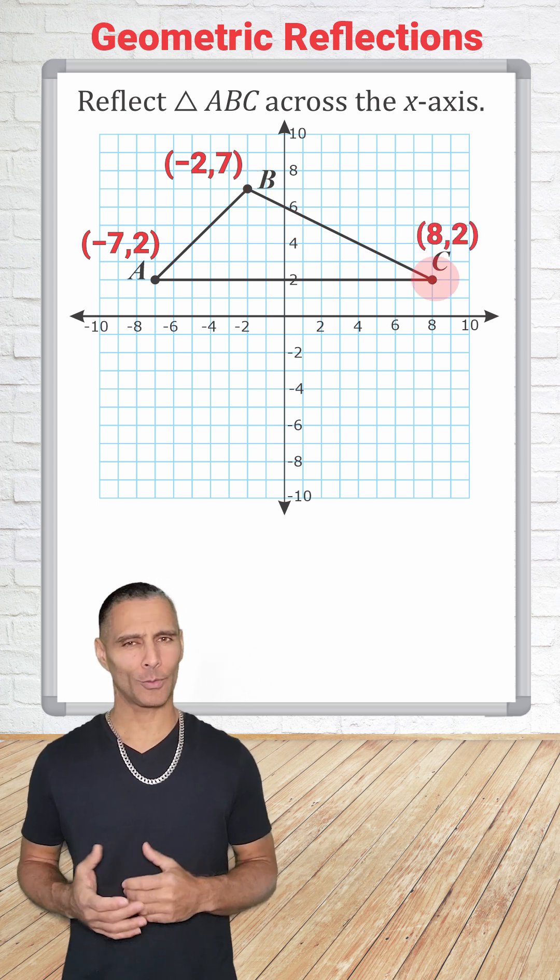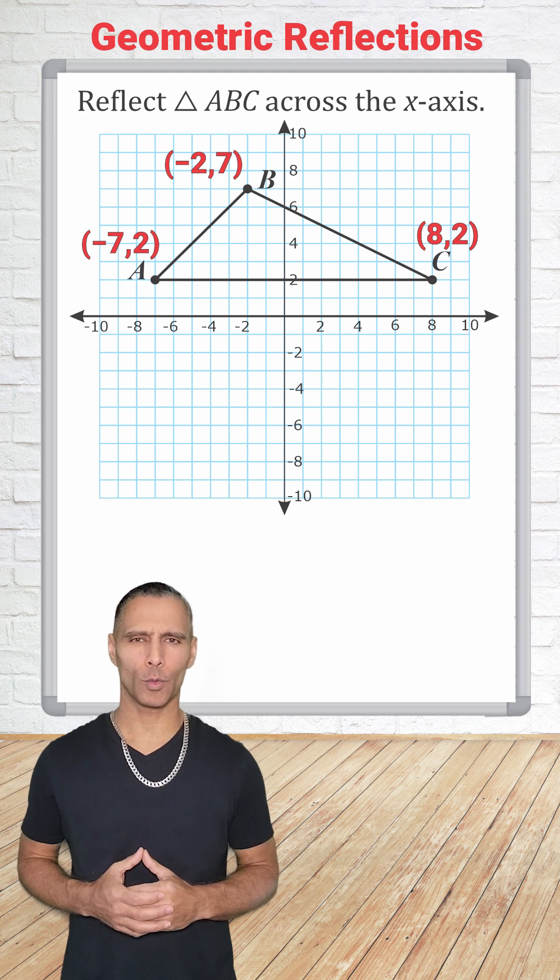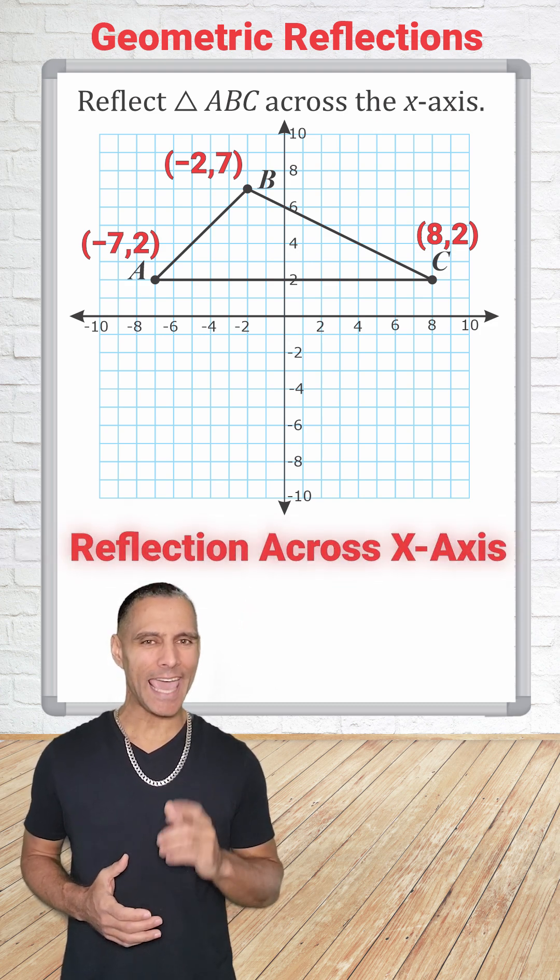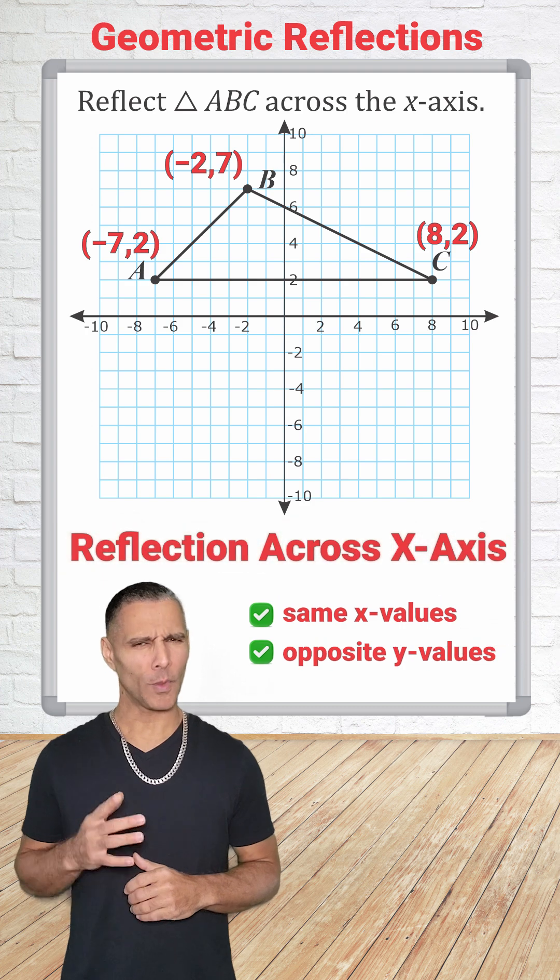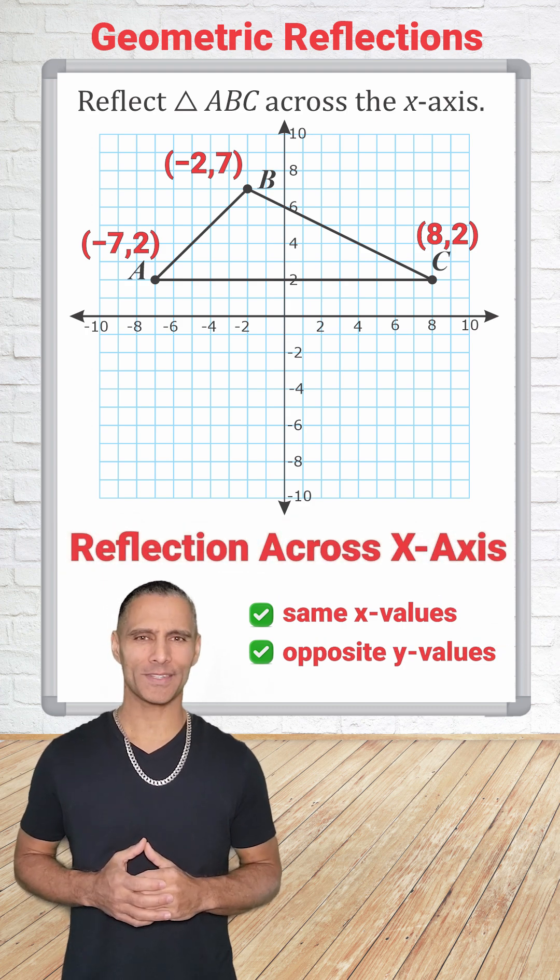After identifying our current coordinates, we apply the reflection rule, which when reflecting across the x-axis, the x-coordinates stay the same, but the y-coordinates change to their opposites.